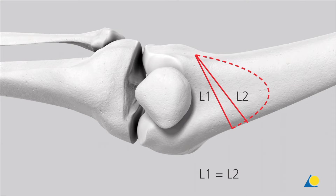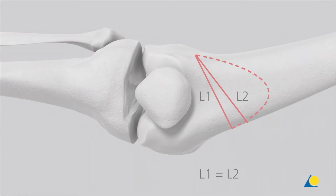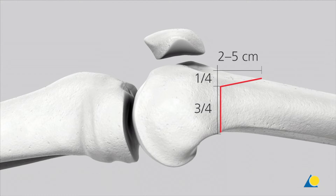It is important that the transverse osteotomy runs from the medial metaphysial area to just proximal of the lateral condyle, as the blood supply and biomechanical circumstances are most suitable in this area. The transverse osteotomy cuts should end 5 to 10 millimeters before the lateral cortical bone, leaving a lateral hinge, and should pass through three quarters of the bone, leaving the ventral quarter intact. The coronal cut must ascend anteriorly at 90 to 110 degrees and should exit the anterior cortex after 2 to 5 centimeters.